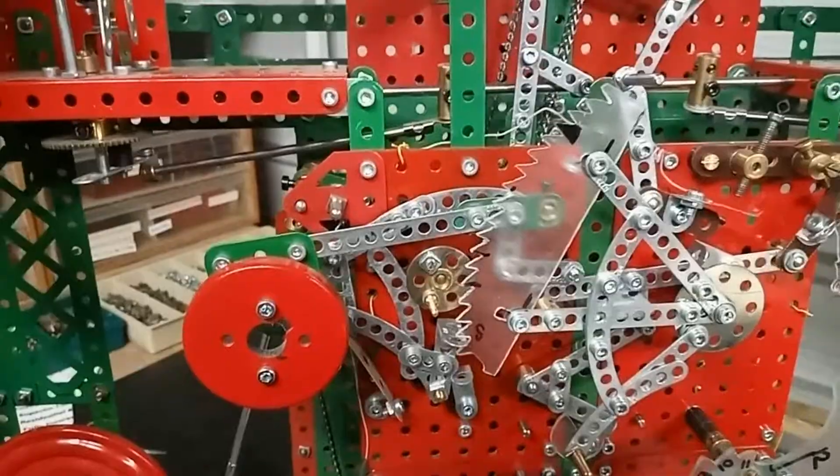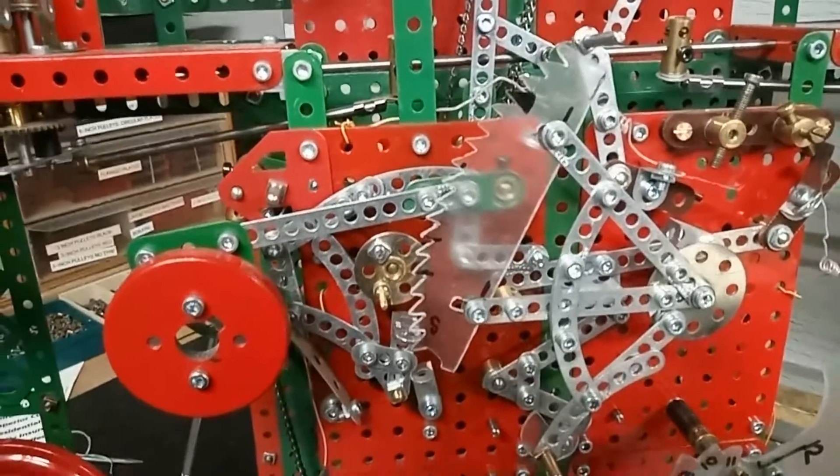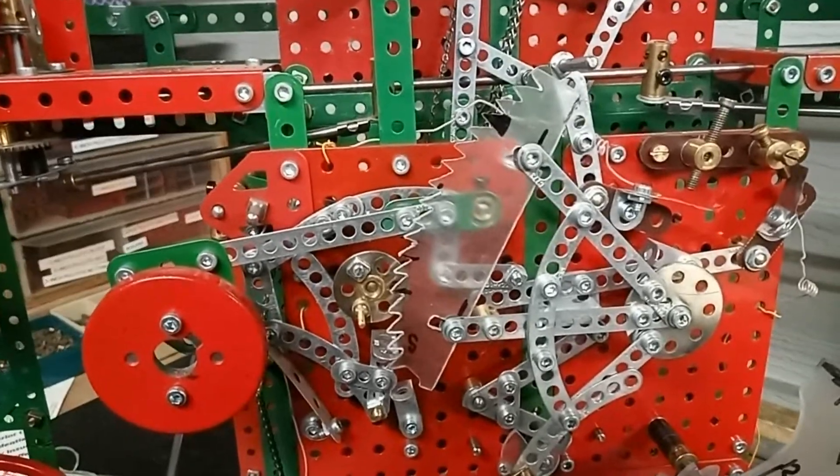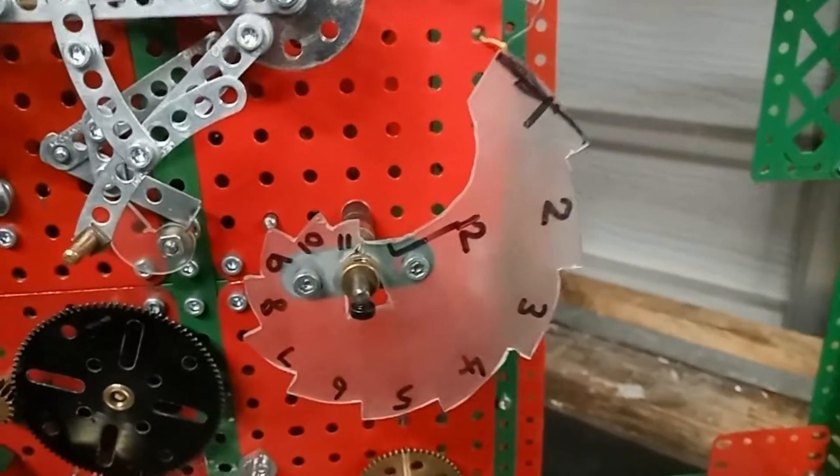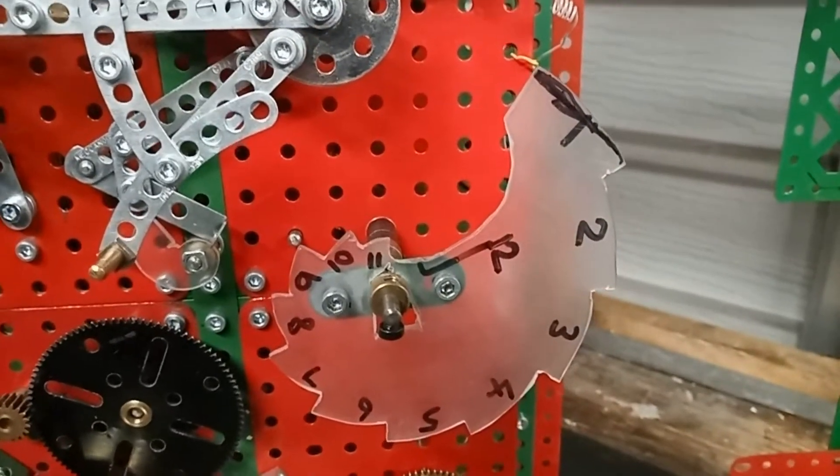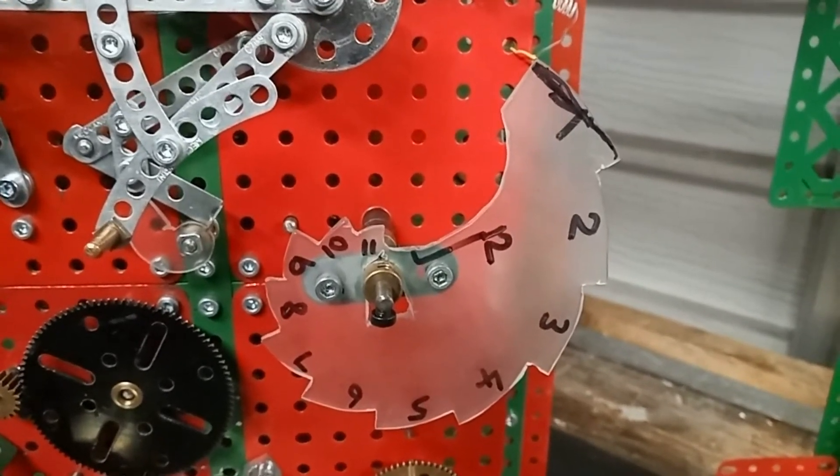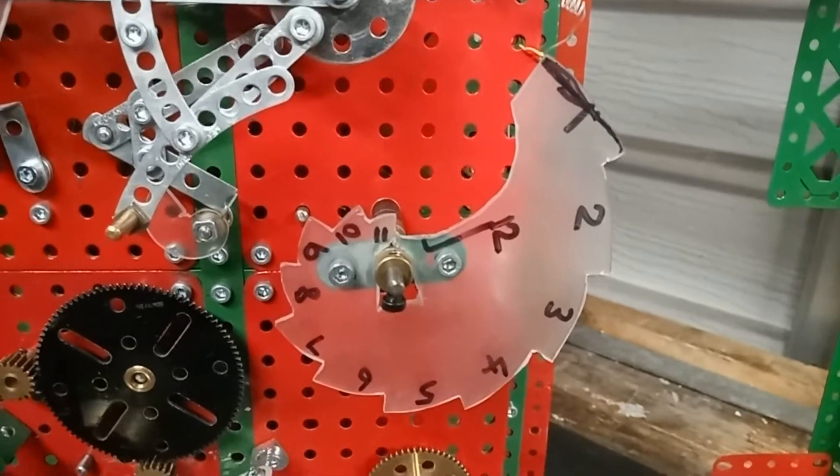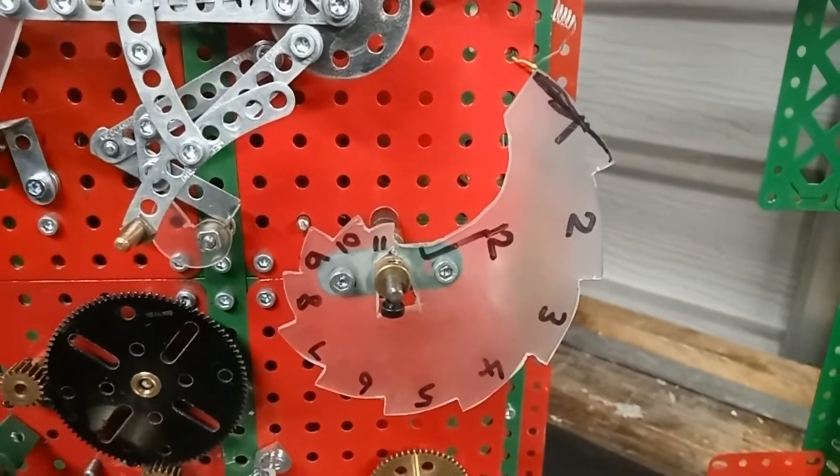The clock has rack striking using this plastic rack here, made out of a piece of plexiglass. The snail here, which determines how many strikes there will be for each hour, is also made of plastic. Very difficult to make in Meccano and it would be enormous.